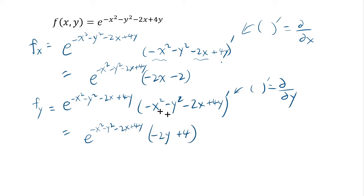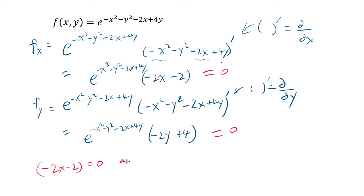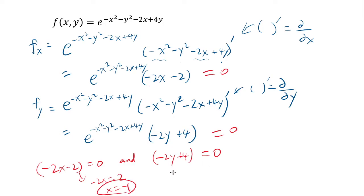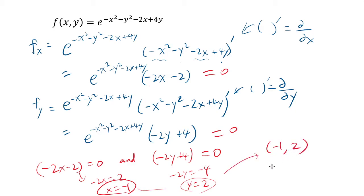I need these to be 0. Again, exponential functions are never 0, so I need −2x − 2 = 0 and −2y + 4 = 0. The first is 0 when −2x = 2, so x = −1. The second is 0 when −2y = −4, so y = 2. Putting these together, (−1, 2) is a critical point.